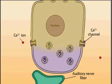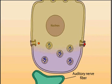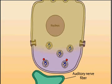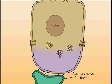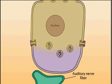Depolarization in turn triggers an influx of calcium ions through voltage-gated calcium channels at the base of the hair cell. The calcium triggers the release of neurotransmitter from synaptic vesicles, also located at the base of the hair cell. This stimulates the afferent nerve fibers which form part of the auditory nerve, and the signal is thus passed along to the brain. This describes the transduction of the nerve impulse in detail.